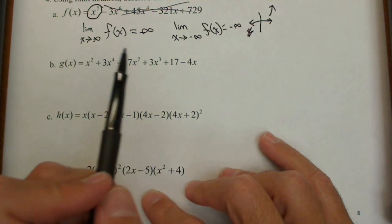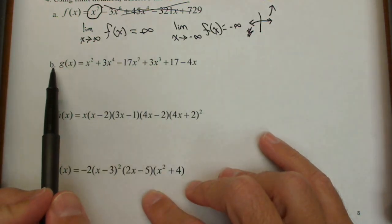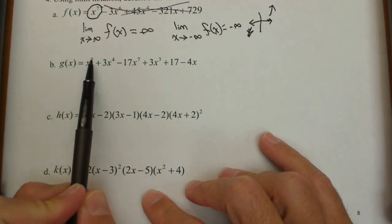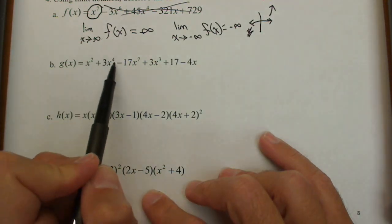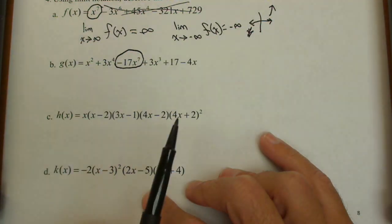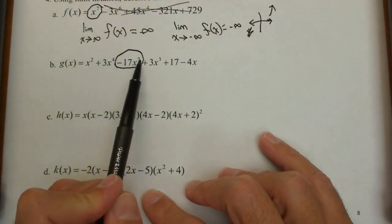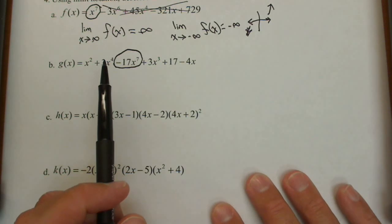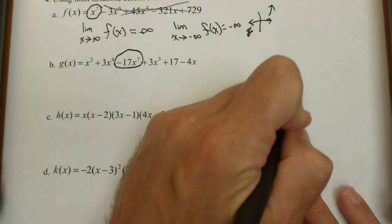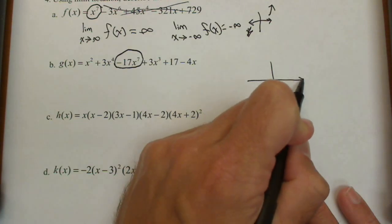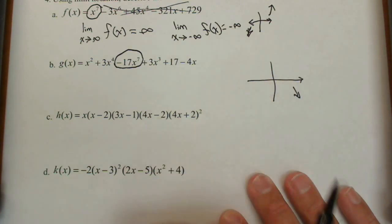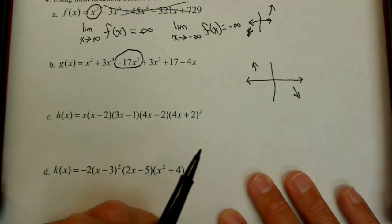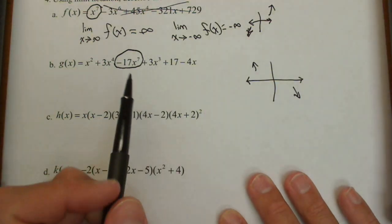Now let's go to polynomial B. We need to identify the lead term. You may think it's x squared because it's out front, but that's not the highest exponent — the term with the highest exponent is actually out of order. That term has a negative sign, so this is going to behave like negative x to the seventh. A negative in front gives us a reflection over the x-axis: as x goes to positive infinity, the y's are going to go to negative infinity, and as x goes to negative infinity, the y's go to positive infinity.